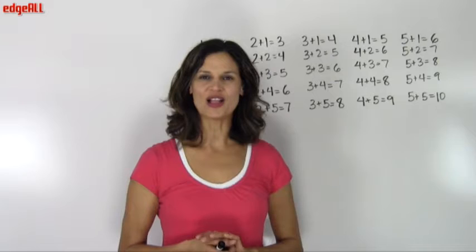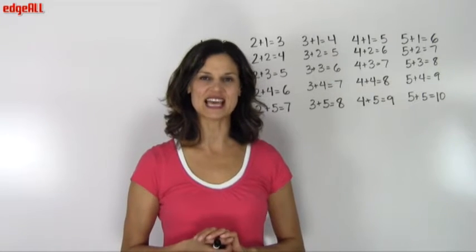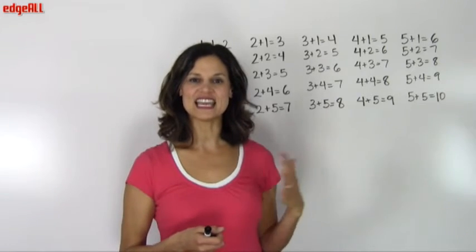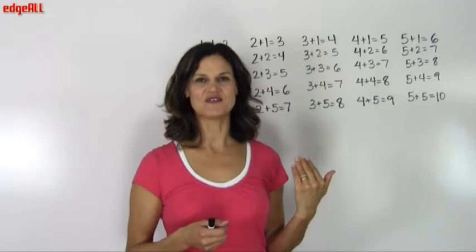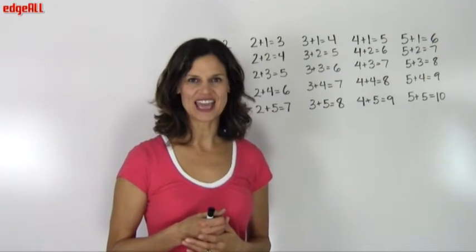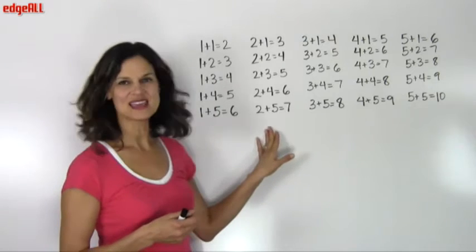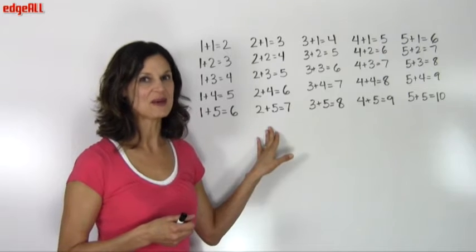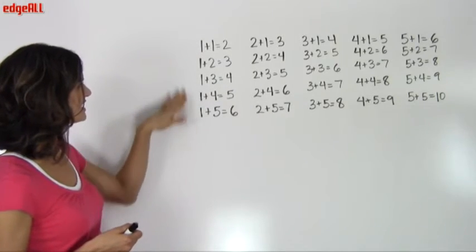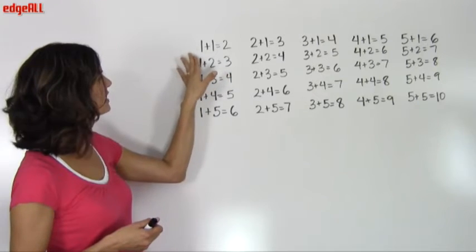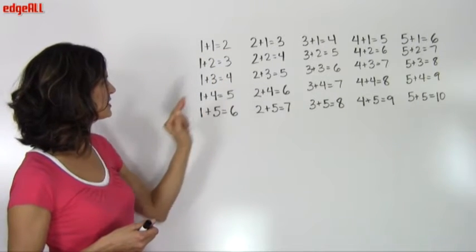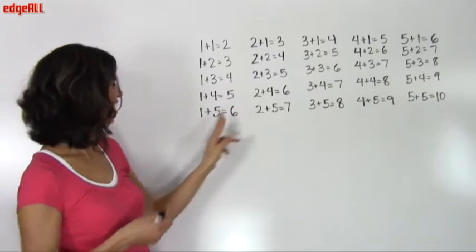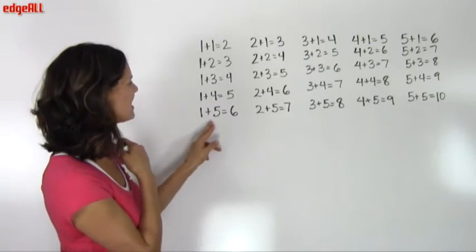The sums for all of the addition problems using digits up to 5 are written here on the board. We call these the addition facts. These are the addition facts up to 5. Let's take a look at some of these sums. These are numbers that you should be practicing a lot so that you have them memorized. This list here is our 1 plus list. So 1 plus 1 equals 2, 1 plus 2 equals 3, 1 plus 3 equals 4, and 1 plus 4 equals 5, and our last one of 1 plus 5 equals 6.